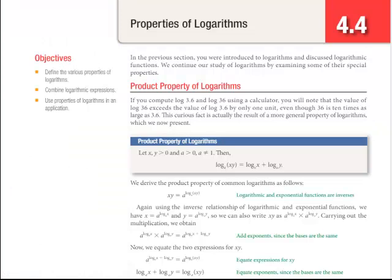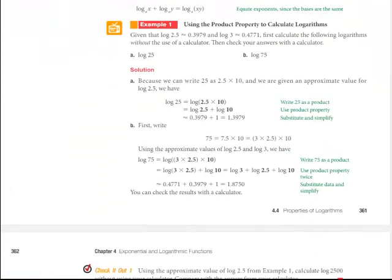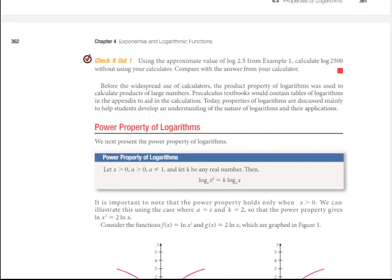The other rules are the power property of logarithms. You have log of x to the k power, and you can pull the k to the front and then just have log of x right behind it. If you split up that x to the k into x times x times x, you can actually see that it's closely related to the product property because that log x would show up k times.